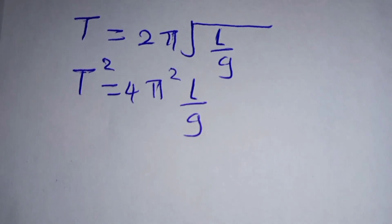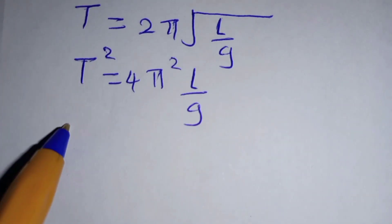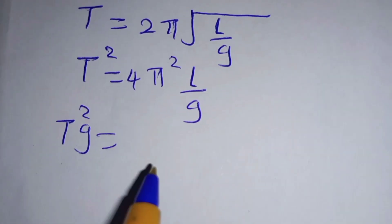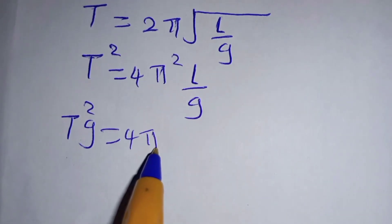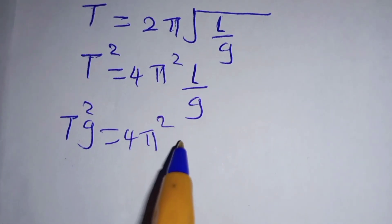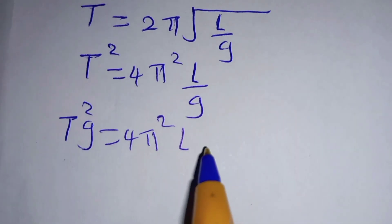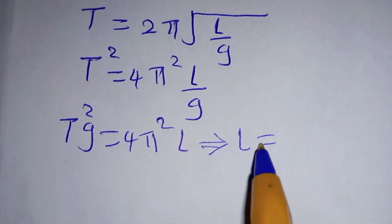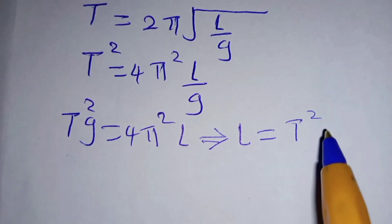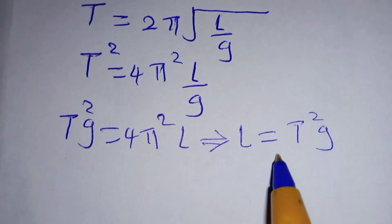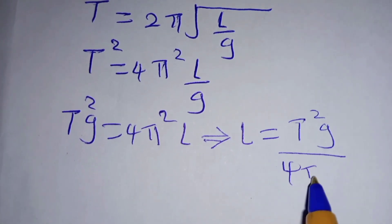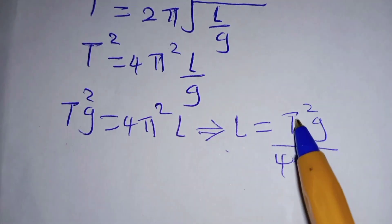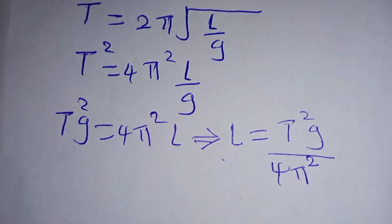We multiply both sides by g so that we obtain T²g = 4π²L. Remember, the objective is to make L the subject of the formula, so L = T²g/(4π²).